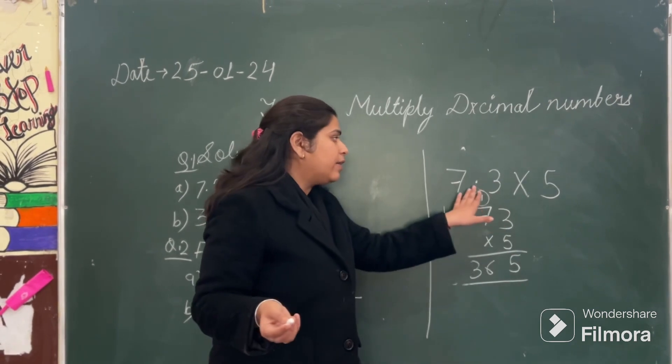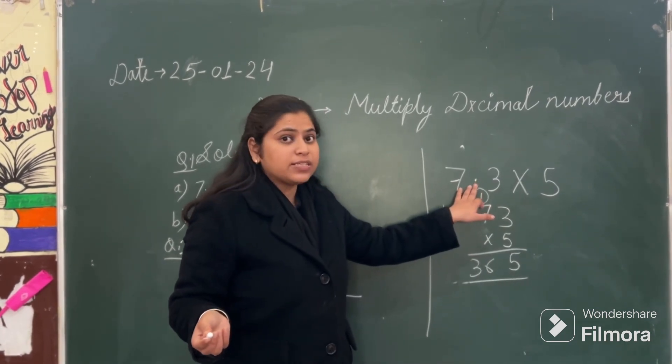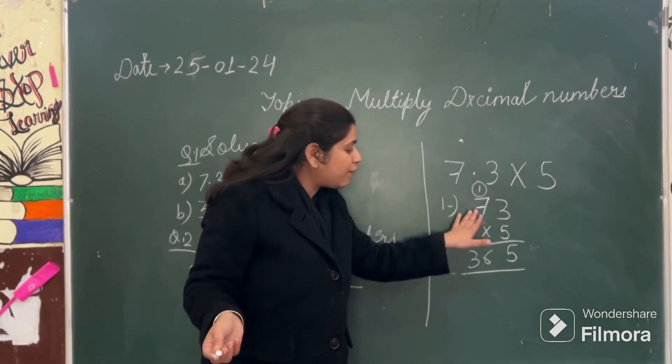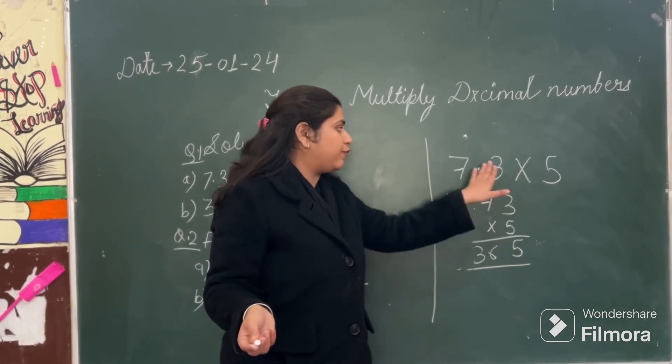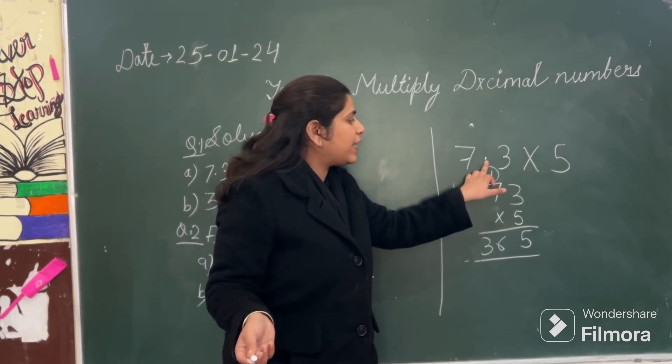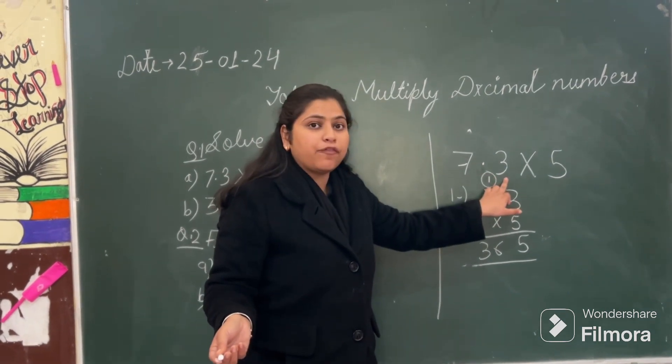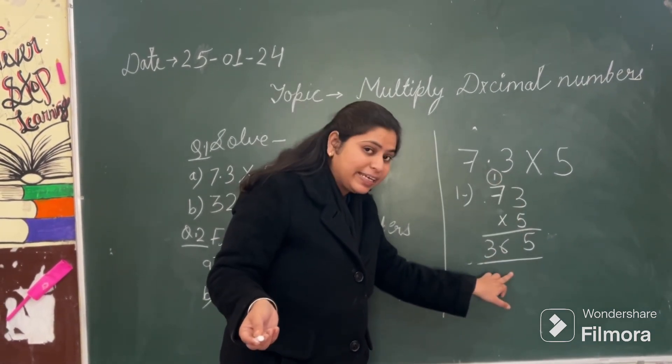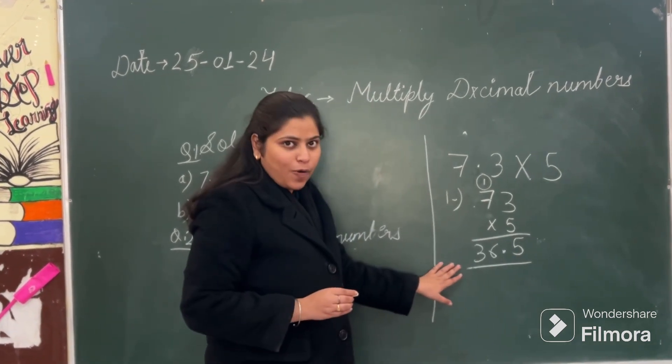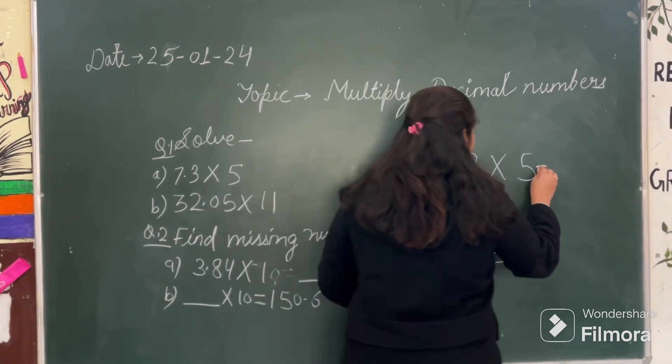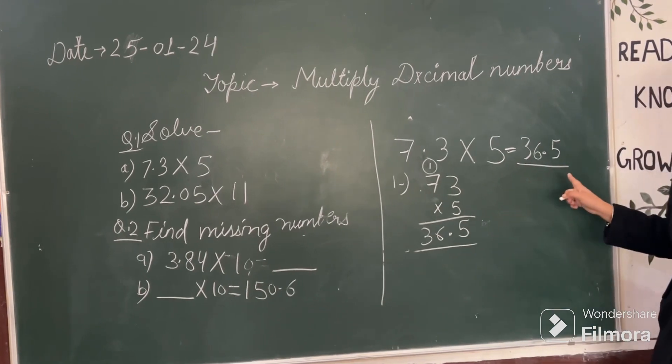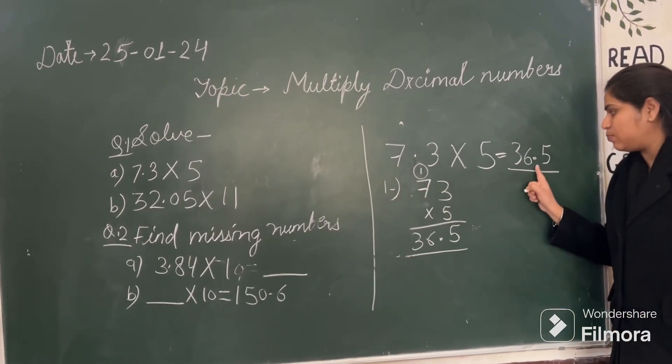Now you must be thinking that if I have ignored this decimal point, then where does this decimal point go? So students, after finding your final answer, then you have to think about this decimal point. So decimal point is where? The decimal point is before 1 digit. It means in the final answer, before 1 digit, you have to place a decimal point. So your final answer of this question is 36.5.